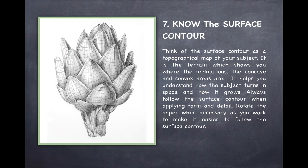Tip number seven, know the surface contour. Think of the surface contour as the topographical map of your subject. It is the terrain which shows you where the undulations, the concave, and convex areas are. It helps you understand how the subject turns in space and how it grows. Always follow the surface contour when you're applying form and detail. If necessary, rotate the paper as you work to make it easier to follow the surface contour. You'll be glad you did.